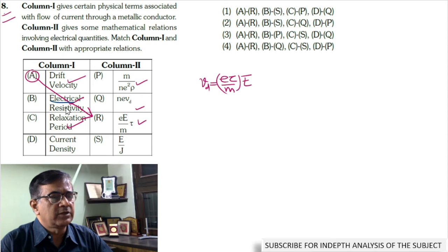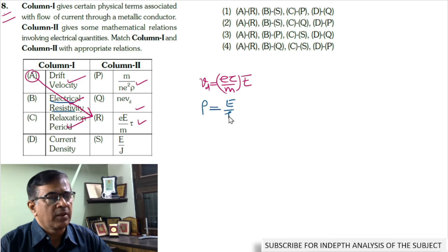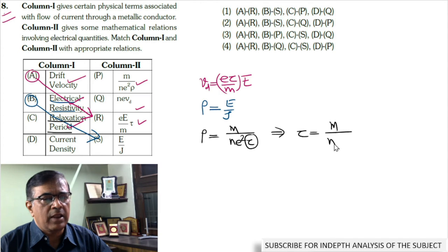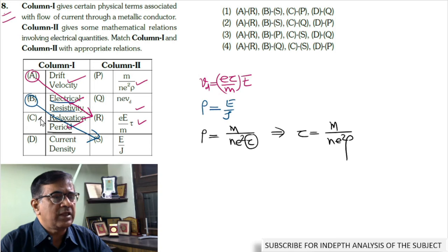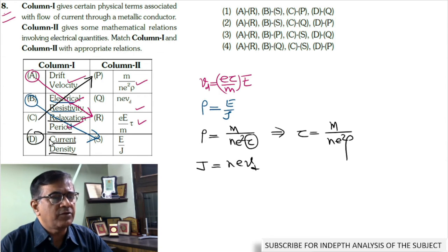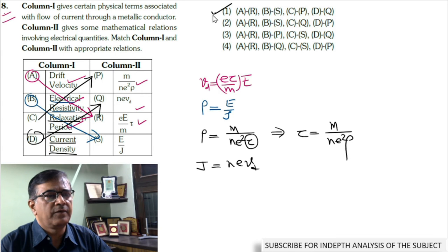The next term is electrical resistivity. The formula is rho equals E by J. Hence B matches with S. The relaxation period formula is rho equals m by n E square tau, so tau equals m upon n E square rho. C matches with P. Current density J is given by n E A V D. D matches with Q. Hence this is the correct option.